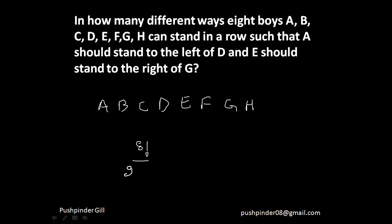Similarly, e should stand to the right of g, which means there is a condition on 2 more letters — we assume them to be identical and divide by another 2 factorial. So the answer is 8 factorial divided by 2 factorial times 2 factorial. That is the number of ways 8 boys can stand in a row such that a is to the left of d and e is to the right of g.